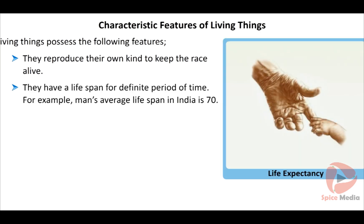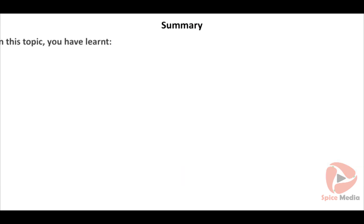Living things respond to stimuli caused from external environments. They reproduce their own kind to keep the race alive. They have a life span for a definite period of time. For example, man's average life span in India is 70 years.